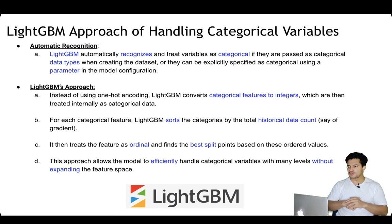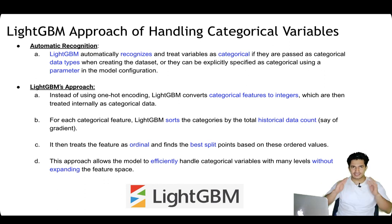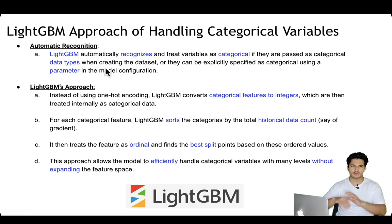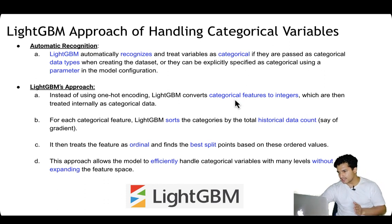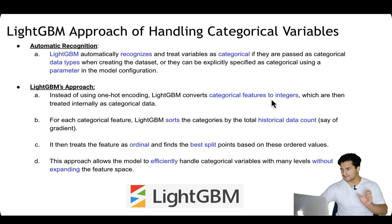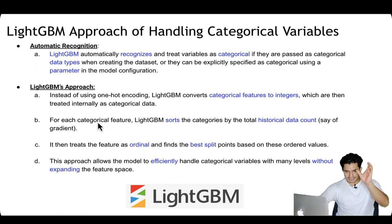There is one more approach: the LightGBM way of handling categorical variables. LightGBM stands for Light Gradient Boosting Machine — it's a tree-based model that is faster due to gradient-based one-sided sampling and feature bundling techniques. In LightGBM you can pass the categorical variable as-is with the categorical data type and it automatically handles recognition and processing. It doesn't use one-hot encoding; instead it converts categorical variables into integers — a kind of label encoding — which are then treated internally as categorical data.